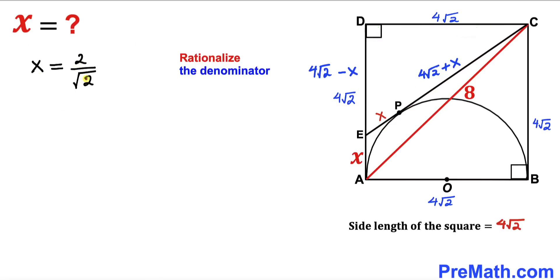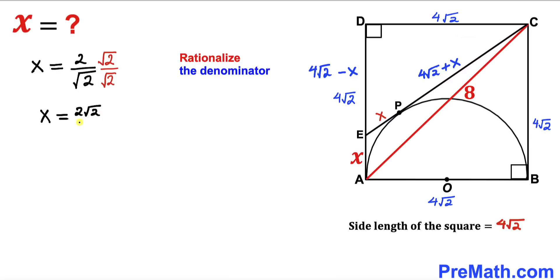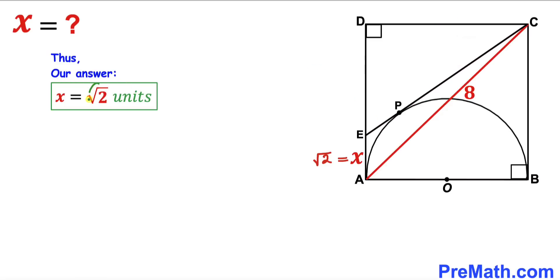Dividing both sides by 16√2, X equals 2 divided by √2. Since there is a radical in the denominator, we rationalize by multiplying numerator and denominator by √2: X equals 2√2 divided by 2. The 2s cancel, giving X equals √2 units, which is approximately 1.414 units. That is our final answer.